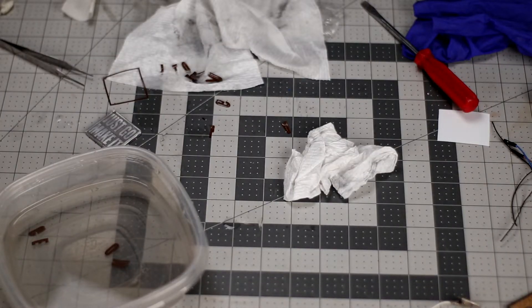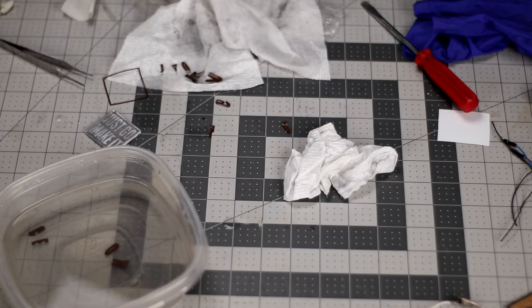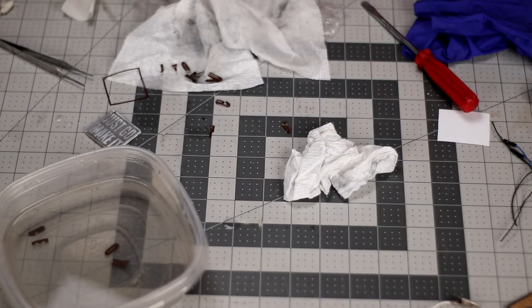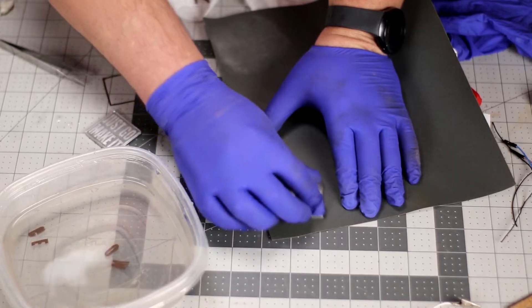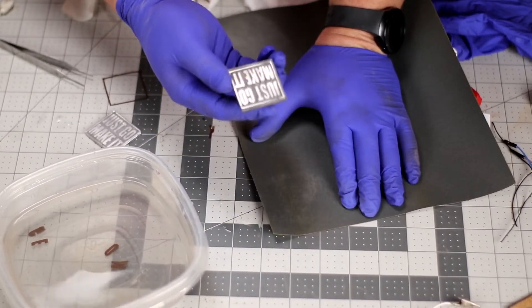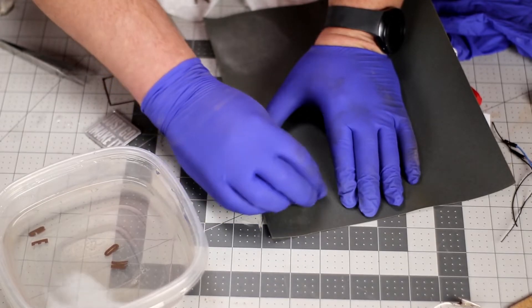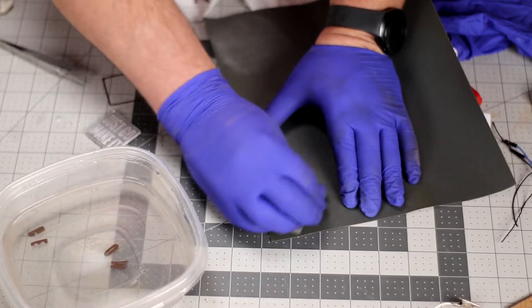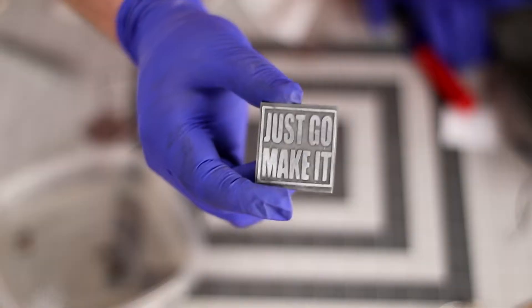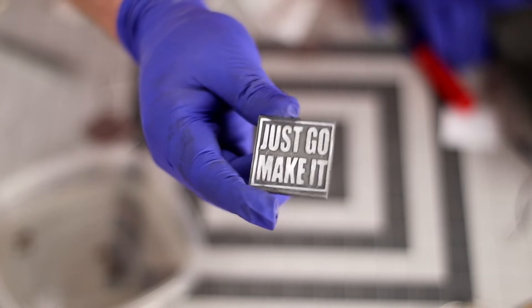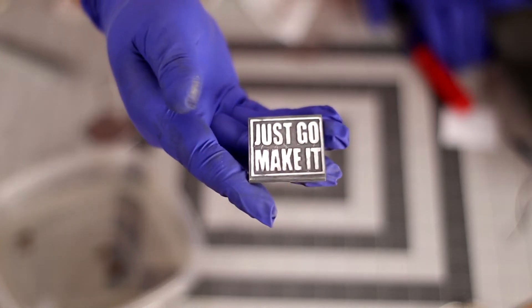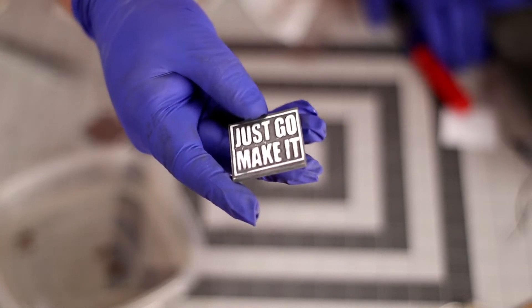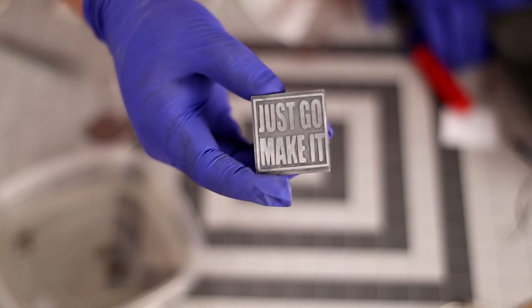I think that looks pretty good. I'll take the edges of it and hit it with the belt sander and I think I'll drill a little hole in the corner and make another key chain out of this.